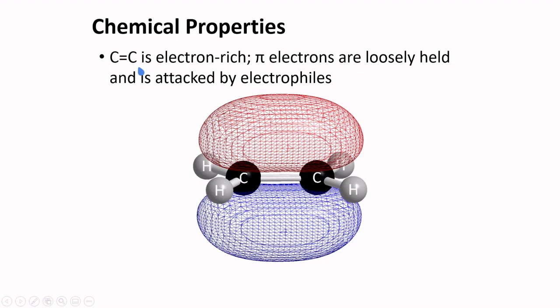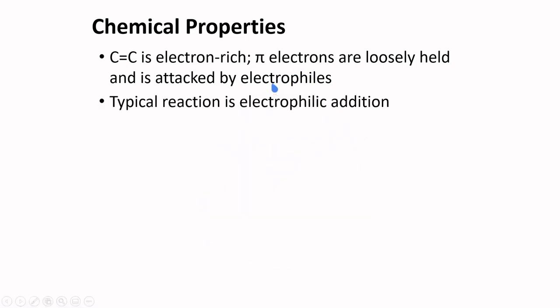The C=C double bond in alkenes is electron rich. The pi electrons are loosely held and can be attacked by electrophiles. The typical reaction of alkenes is called electrophilic addition, represented here. We have an electrophilic atom that can be attracted to this double bond, and both of these components will end up being added to the alkene.